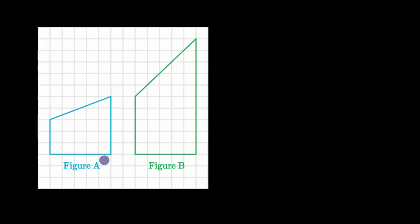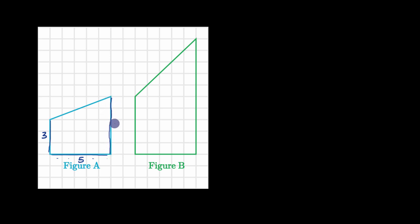There are multiple ways you could approach this. One way is to see what the scaling factor would be. So we could look at the side lengths. This side right over here has length three on figure A. The corresponding side on figure B has length five. This side length has length five as well, and this side also has length five. This length we could figure out with the Pythagorean theorem, but I won't look at that one just yet.